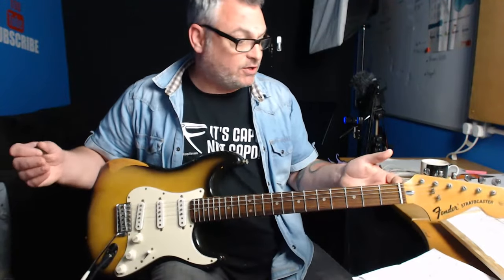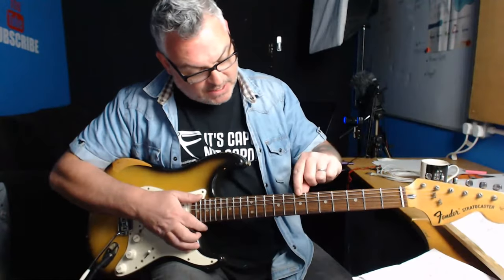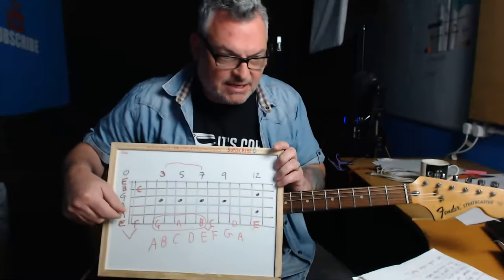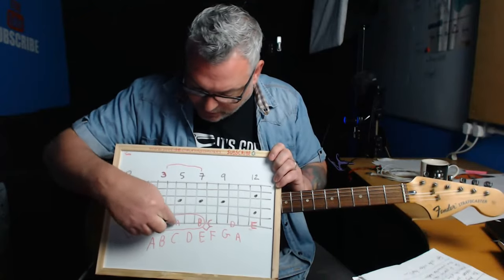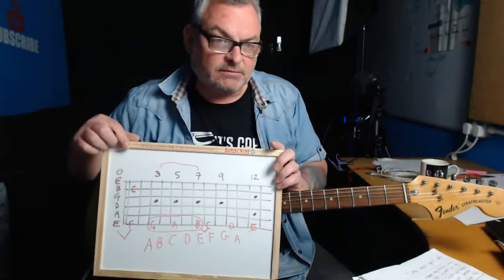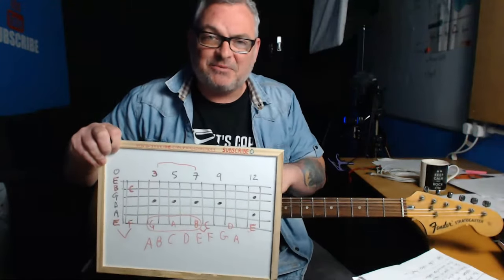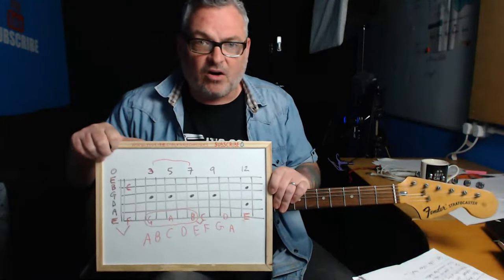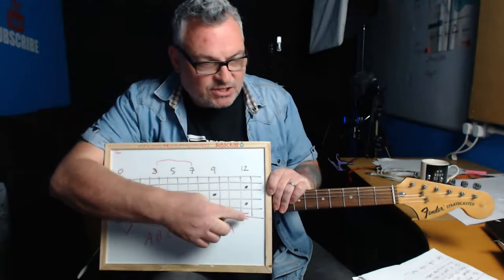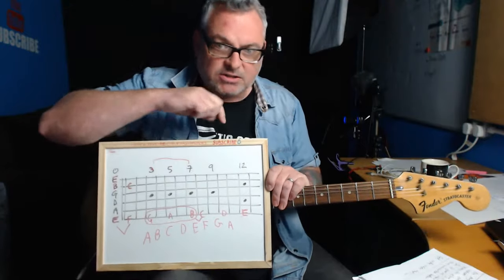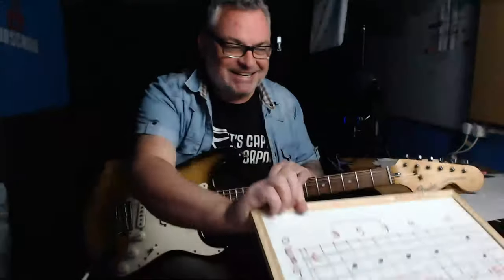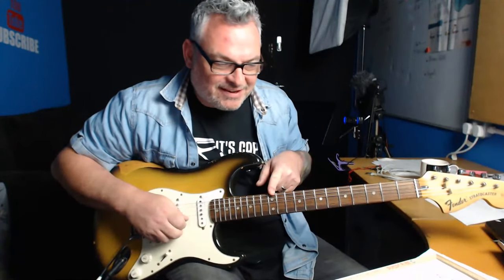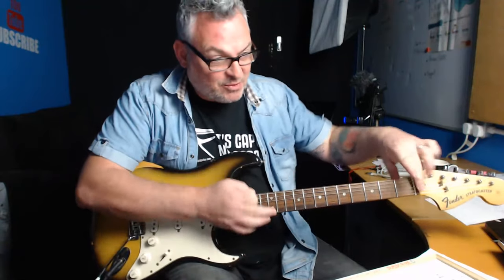If you count E, F, G, A, B, C, D, E — that's eight notes. Eight, like an octopus or an octagon — in music we call that an octave. The 12th fret tells you that you've hit the octave, and anything after that is just a repeat. We can extend this same information up into the higher positions of the neck.